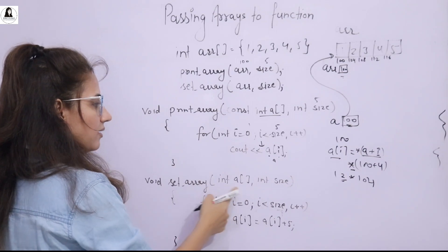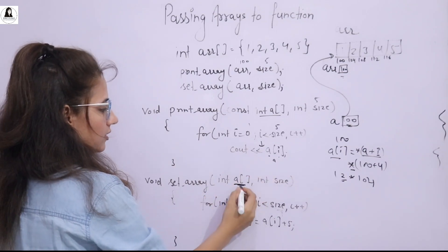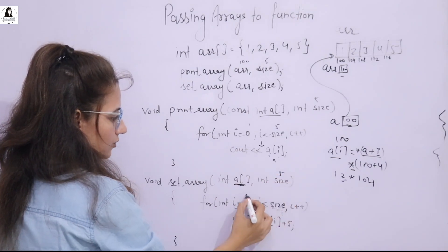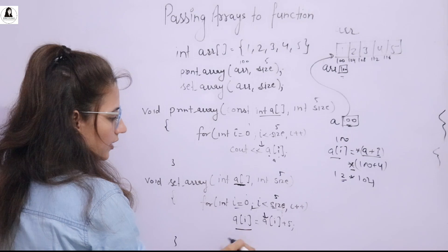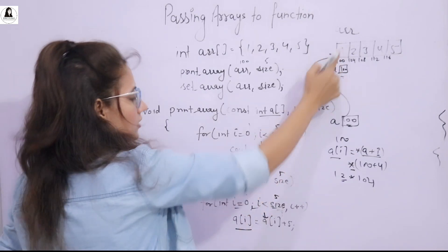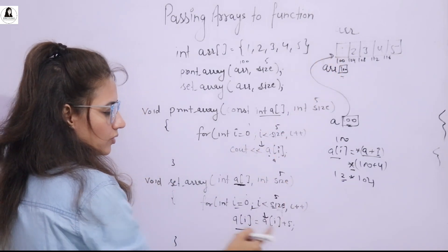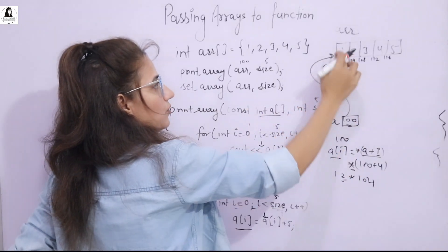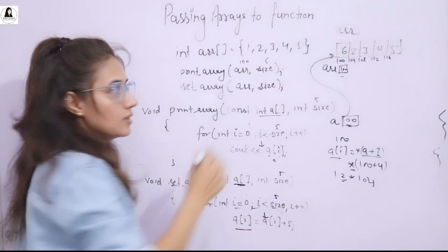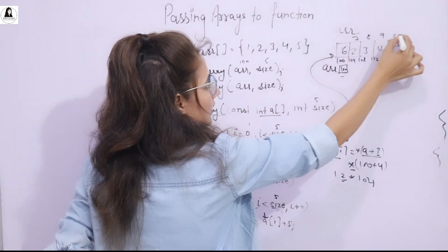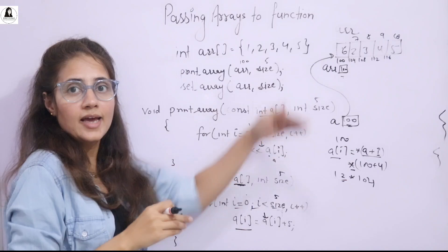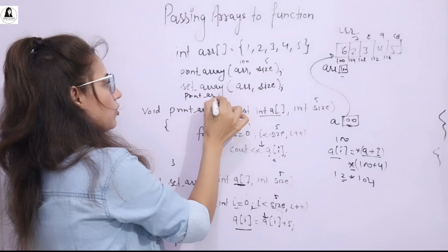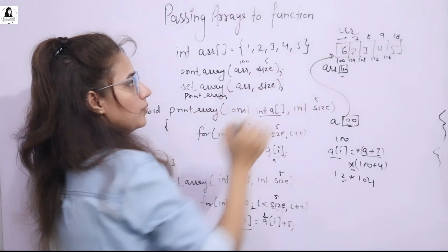For set_array, again 100 is passed to A and 5 to size. When i=0: A[0] = A[0] + 5, so the value at address 100 becomes 1+5=6. When i=1: address 104 becomes 2+5=7, and so on — giving 6, 7, 8, 9, 10. The original array is directly modified. After this, calling print_array again will show the updated values.